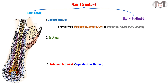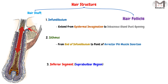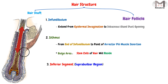The second region is the isthmus, which extends from the sebaceous gland duct opening — or the end of the infundibulum — down to the point of the erector pili muscle insertion. In this region, we find the bulge area, where the stem cells of the hair reside.